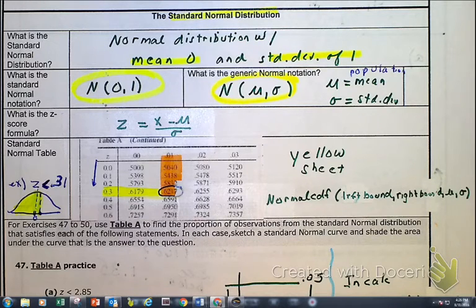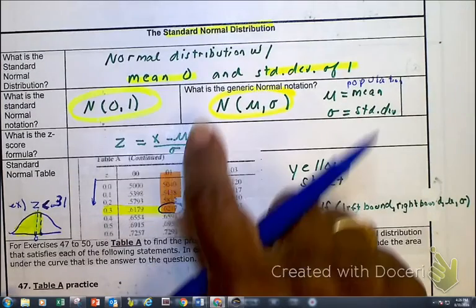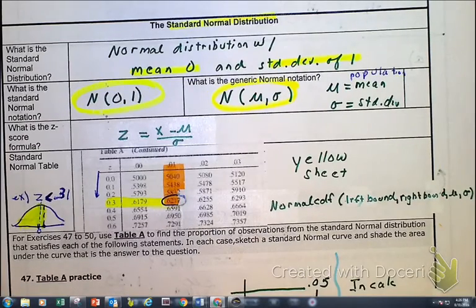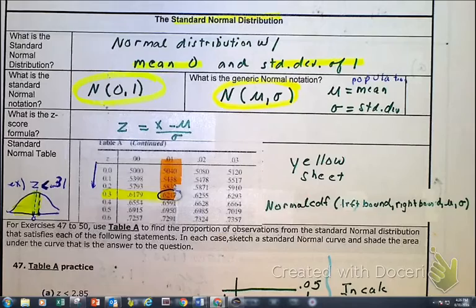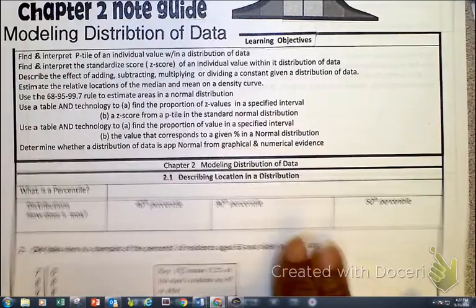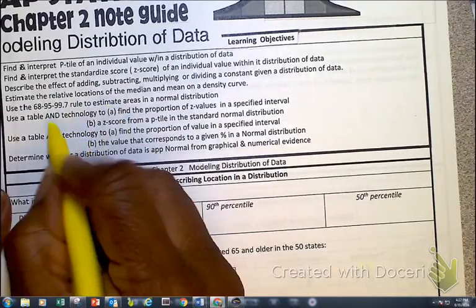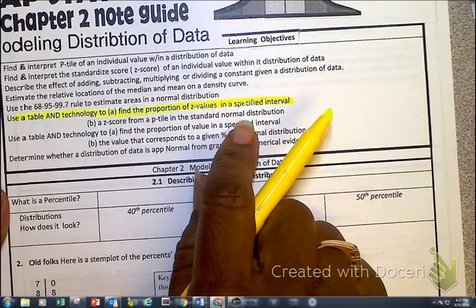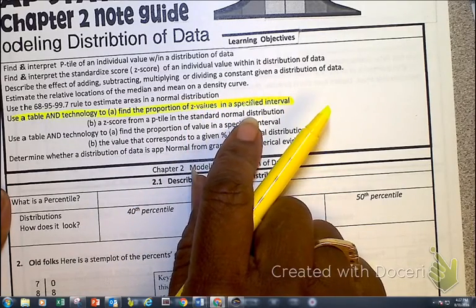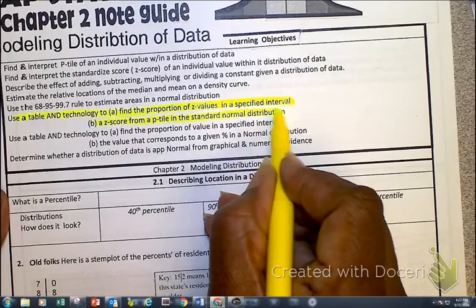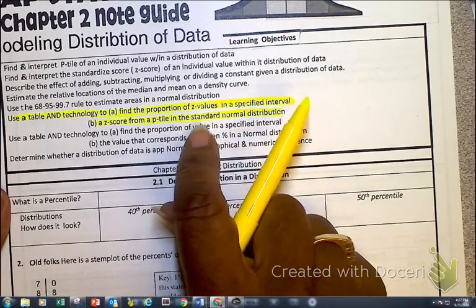What we're about to change is looking at our idea of our z-score and changing it to a percentile or a probability. The objectives of this video are that we are going to be using the table and technology to find the proportion of a z-score in a specific interval, and a z-score to find the percentile from the p-tile in a standard normal distribution.